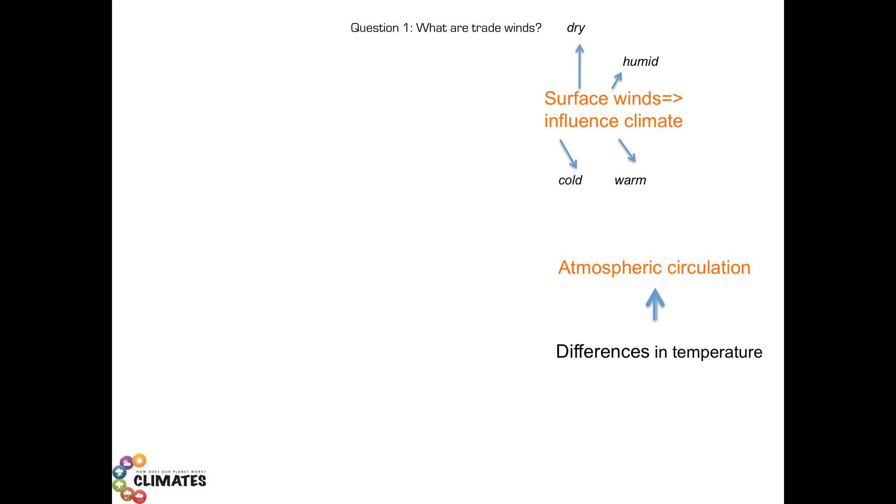The wind carries warm or cold air on the planet. It also carries humidity, creating clouds, rain showers, storms, hurricanes. So winds can be dry, humid, warm or cold, depending where they come from. They will, as for the sun, influence the regional climate.